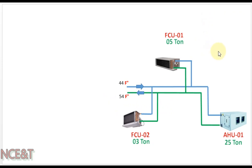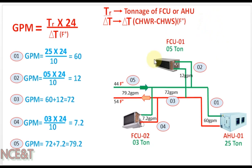For selecting the chilled water pipe size — either by friction loss chart or MACQA software — we need to know the GPM for these equipment. For the calculation of GPM for any AHU and FCU, we have the formula: GPM = tons of refrigeration × 24 ÷ ΔT, where ΔT is the difference of temperature between chilled water return and chilled water supply in degrees Fahrenheit. Since we know the capacity of the FCUs and AHU in tons, we will apply this value in the formula to calculate the GPM.